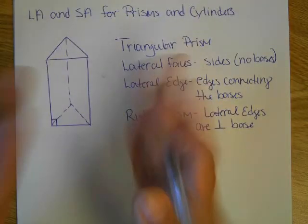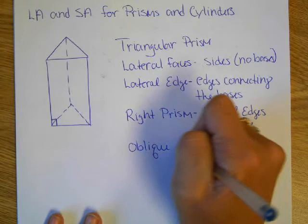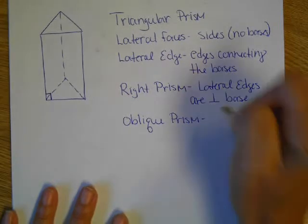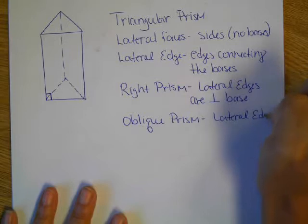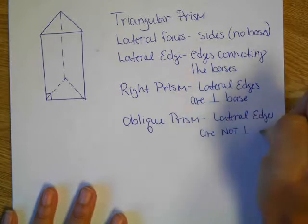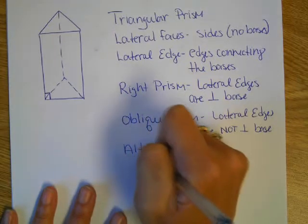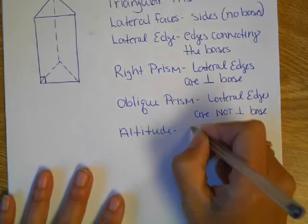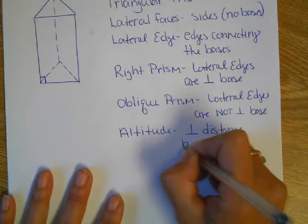A lateral edge are all of the verticals that are connecting the bases. So the edges connecting the bases. That means it's standing up perpendicular to the floor. That makes it a right prism. So a right prism. So the lateral edges are perpendicular to the base. And if they're not perpendicular, if it's leaning, that's called an oblique prism. So the lateral edges are not perpendicular to the base.